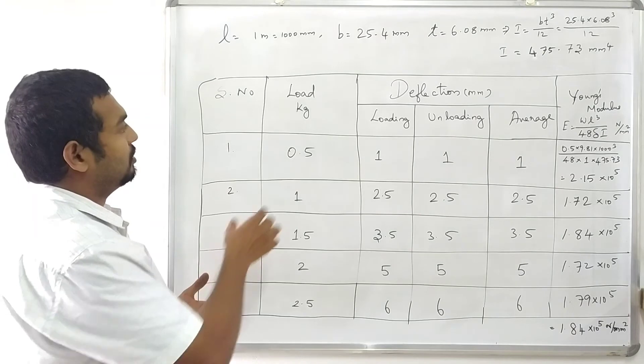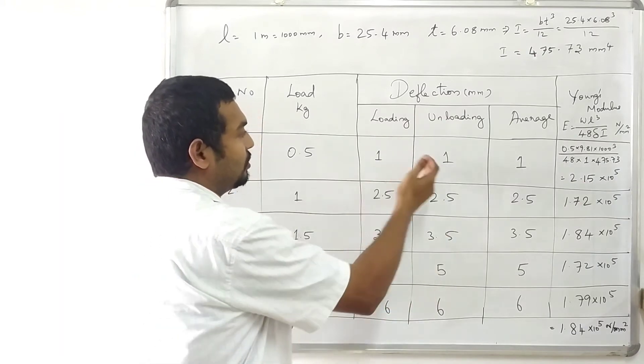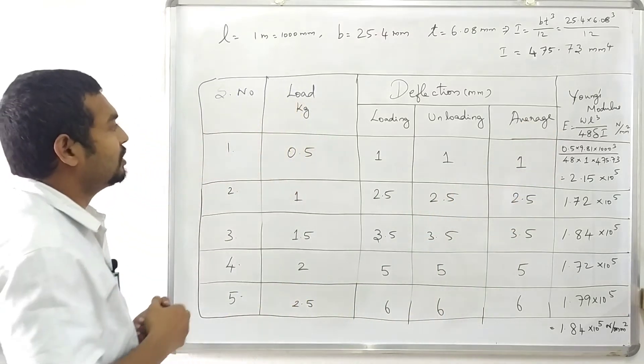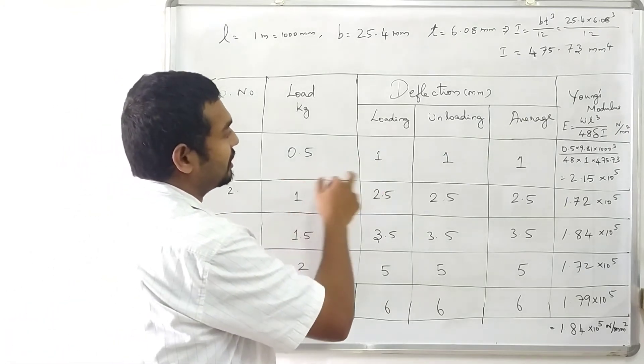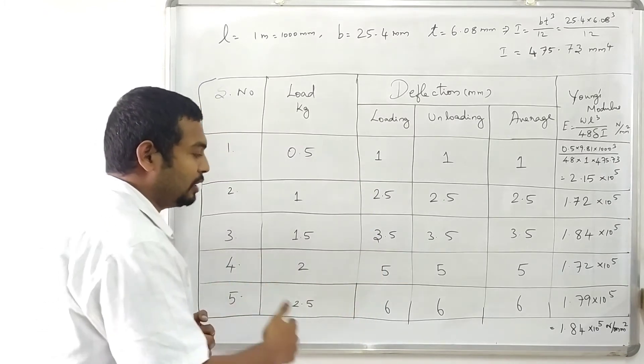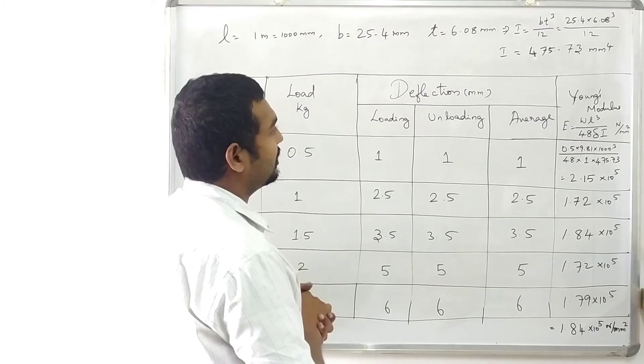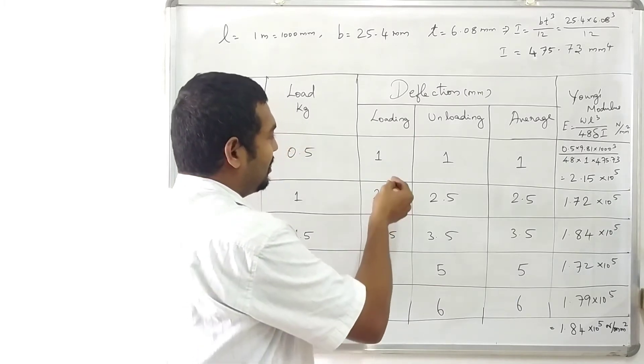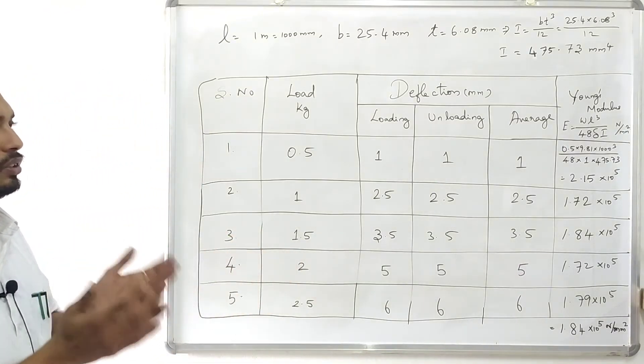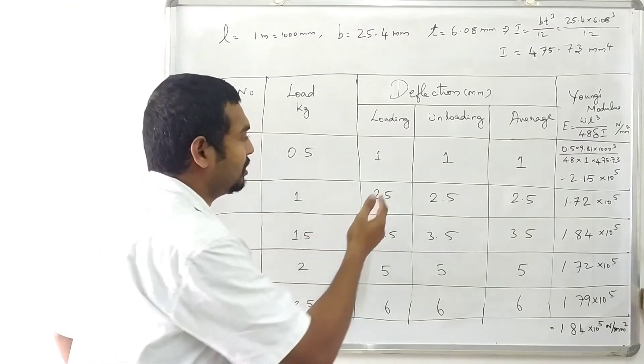Next, readings are tabulated. Load, deflection while loading, deflection while unloading. In the readings, Young's modulus calculate. First load 0.5 kg apply, deflection 1 mm. Next 0.5 kg increase, deflection values. Unloading deflection values is developed. Minor variation during loading and unloading, mild variation due to vibrations external factors. On the reason loading and unloading condition deflection measure, average note.